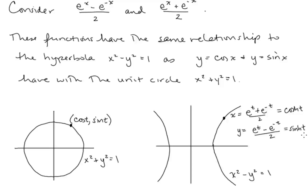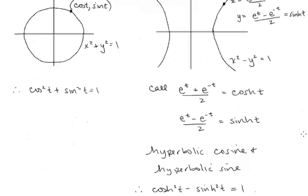We pronounce these cosh(t) and sinh(t). Just as the unit circle gives us cos²(t) + sin²(t) = 1, from the equation of the hyperbola we get cosh²(t) − sinh²(t) = 1.